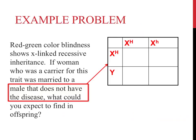Since this male does not have this disease, you should have a capital letter representing the dominant allele on his X-chromosome. You should never place a superscript on the Y-chromosome, as different chromosomes, such as the X and the Y, have different genes on them.